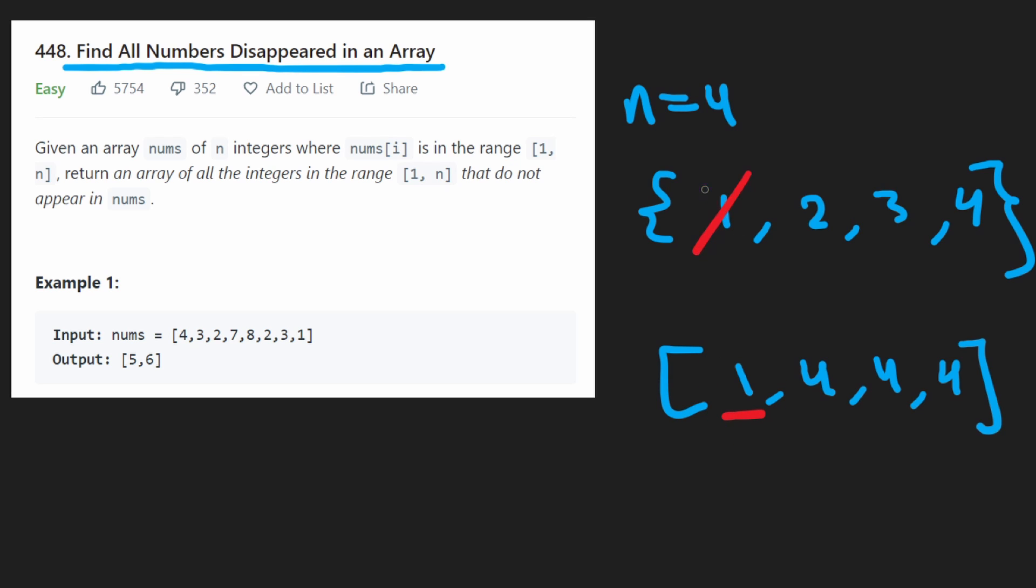So suppose we were given this array, 1, 4, 4, 4. In that case, we'd iterate through each of these. We see a 1, then we're going to remove 1 from our data structure. We see a 4, so we're going to remove 4 from our data structure. We see another 4, but it's already been removed, so we don't have to do anything. And again, we see the last 4. It's already been removed, so we don't do anything. And the values that are left over, 2 and 3, are going to be our result.